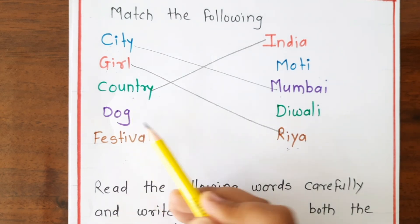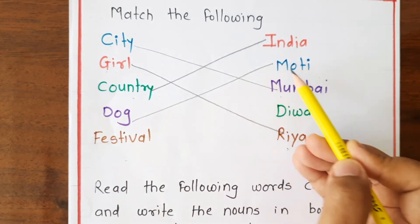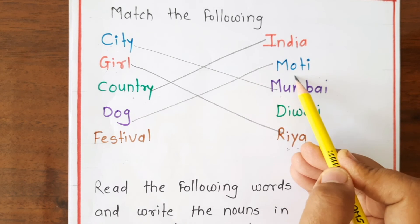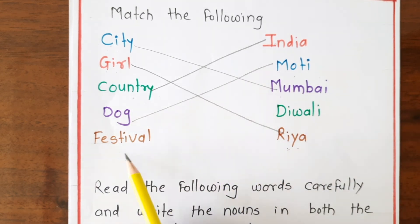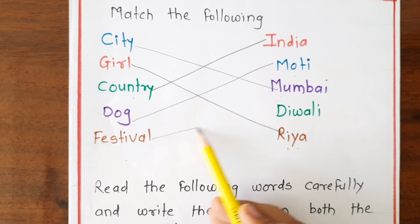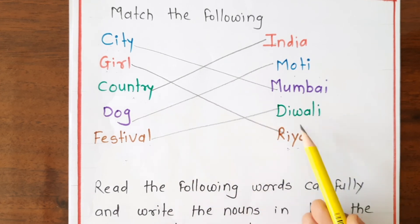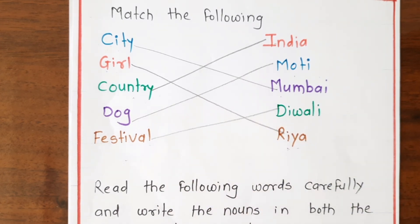Next, dog — the dog's name is Moti. So 'Moti' is the proper noun and 'dog' is the common noun. Next, festival — 'Diwali' is the proper noun and 'festival' is the common noun.